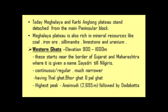Moving to the western edge of the Deccan Plateau, that is the Western Ghats. The elevation of Western Ghats is about 900 to 1600 meters, starting from the Gujarat-Maharashtra border — called Sahyadri — and reaching all the way to the Nilgiris. Western Ghats are continuous and regular, with three divisions: Thal Ghat, Bhor Ghat, and Pal Ghat. The highest peak is Anaimudi, followed by Doddabetta in the Nilgiris.